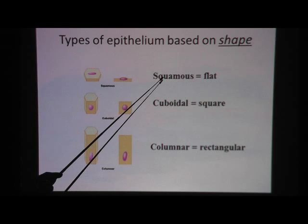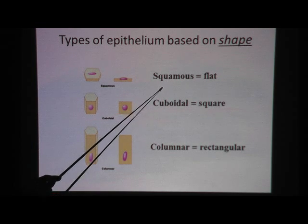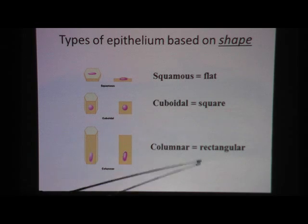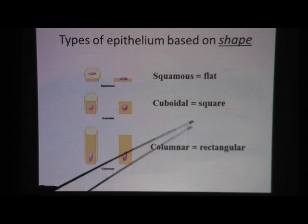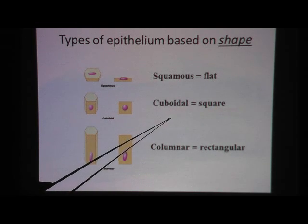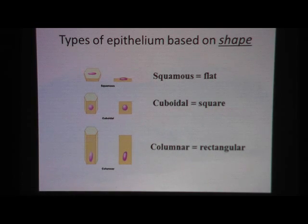The squamous part talks about the shape of the cell. If the cells look squished — S-Q for squished, S-Q for squamous — then it's stratified squamous, and that's what we're talking about. Just know that there is also such a thing as cuboidal cells and columnar cells.